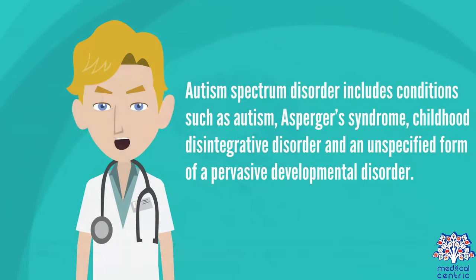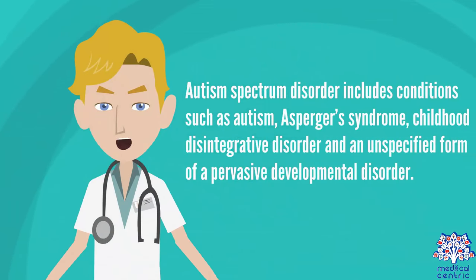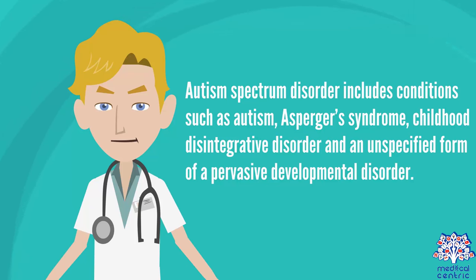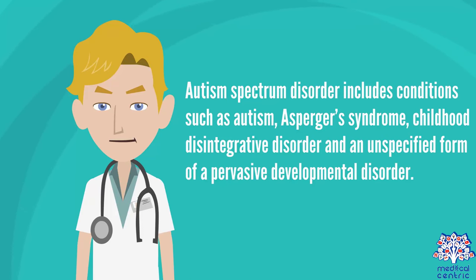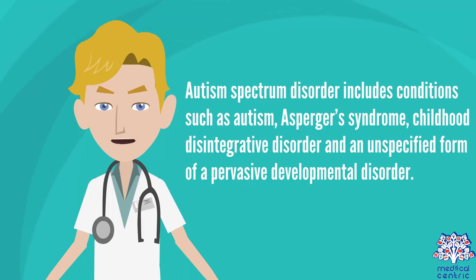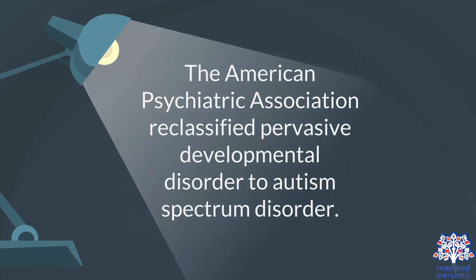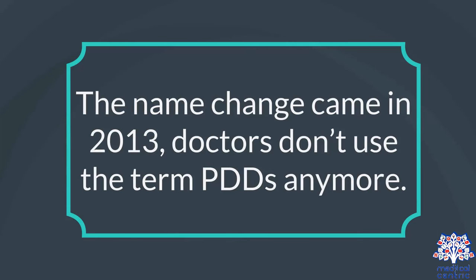Autism spectrum disorder includes conditions such as autism, Asperger's syndrome, childhood disintegrative disorder, and an unspecified form of pervasive developmental disorder. The American Psychiatric Association reclassified pervasive developmental disorder to autism spectrum disorder. The name change came in 2013, and doctors don't use the term PDDs anymore.